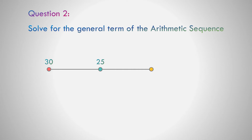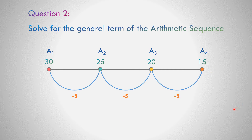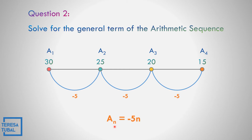How about number 2 in the arithmetic sequence 30, 25, 20, and 15? The first term is 30, the second term is 25, the third term is 20, the fourth term is 15. The common difference from first up to the last term is equal to negative 5, because 15 minus 20 is negative 5, 20 minus 25 is also negative 5, and 25 minus 30 is equal to negative 5. So this is arithmetic again, so a sub n equals the common difference negative 5 times n.